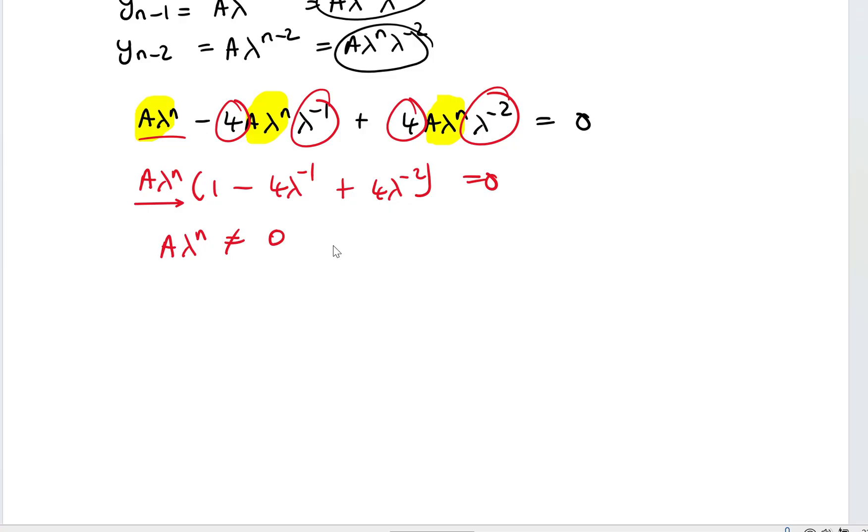So we said in the previous lesson that this must not be equal to 0 because this is what our general solution should look like. So this must be non-trivial. This means that this should definitely be equal to 0. So 1 minus 4 lambda^(-1) plus 4 lambda^(-2) must be equal to 0. If I've got a times b multiplied to give you 0, but a is not equal to 0, it means that b is the one that must be 0.